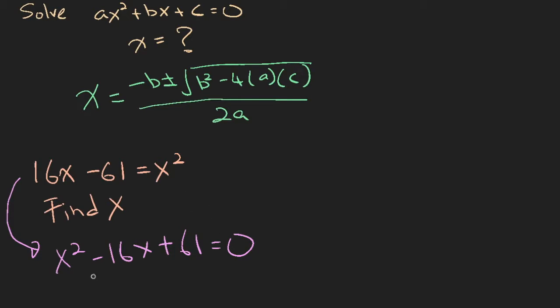Now immediately after you have written it like that, you can identify what is a, b, and c. A is 1, because the number in front of X squared is 1. B is minus 16.